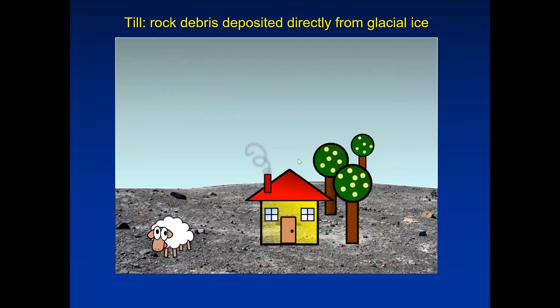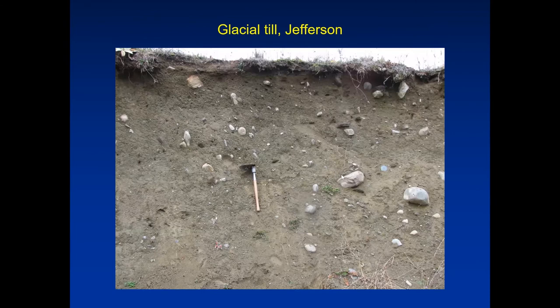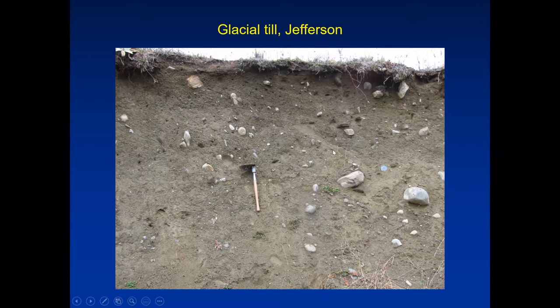This is an actual till exposure over in Jefferson. It's not particularly stratified — just a conglomeration of silt, clay, sand, and rocks. This kind of till is what we commonly refer to as hard pan. It's not easy to dig; sometimes it's so tight you almost have to blast it out. It does not readily transmit groundwater or other liquids such as waste from a leach field.